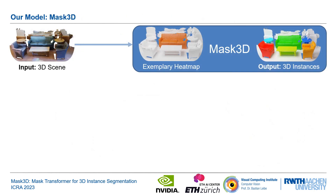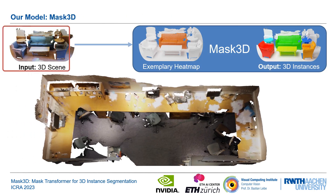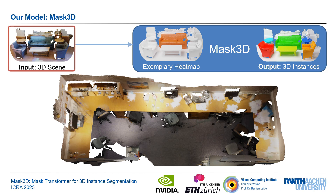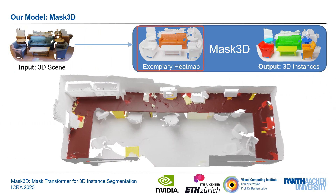Instead, our method Mask3D does not rely on any kind of voting and grouping. All instances in the scene are simultaneously represented as semantic heatmaps. We see that the table heatmap has high confidence over the full extent of the instance, which results in a correct prediction.